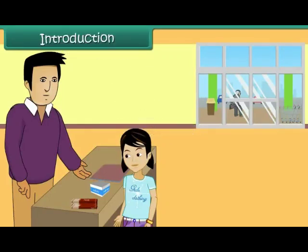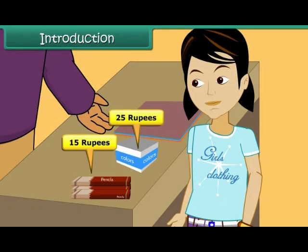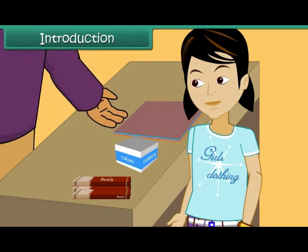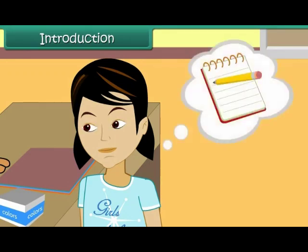Rita has bought pencils for 15 rupees, colors for 25 rupees, and pastel sheets for 12 rupees. The shopkeeper asks her to pay 52 rupees. Rita wants to verify, but there is a problem. She cannot do it without writing the numbers down on paper. She cannot perform mental calculations. You just saw how important mental arithmetic is.